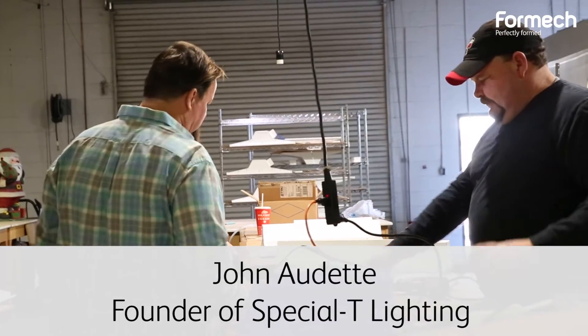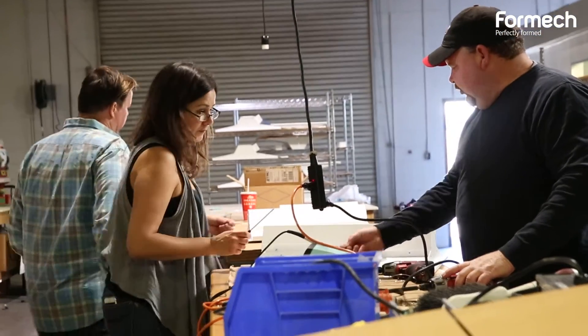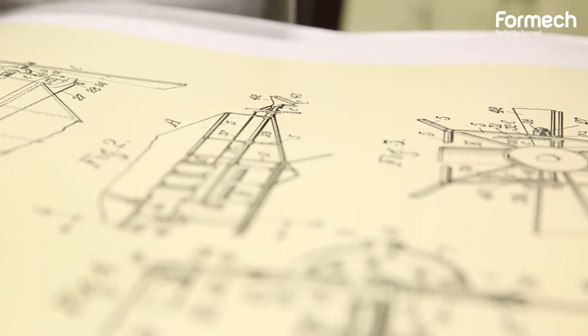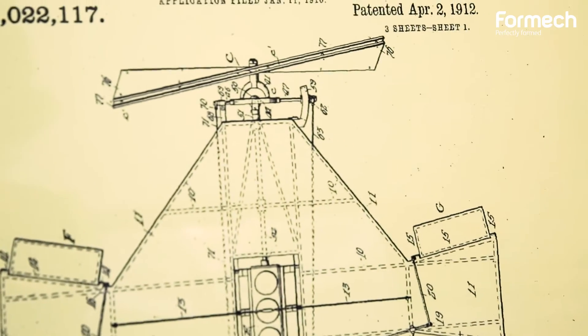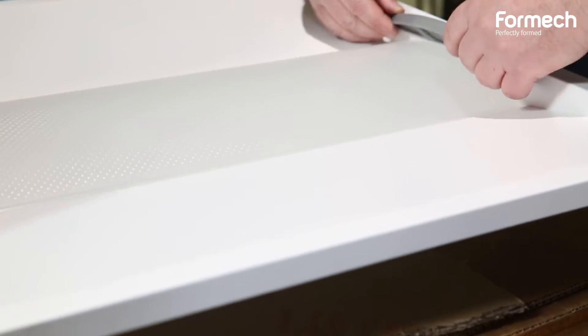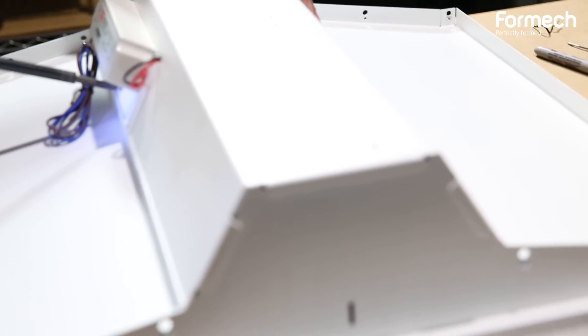I'm John Odette and I'm the founder of Specialty Lighting. I have a background in engineering with my family. My brother is one of my partners and we've been building lighting for 29 years now.